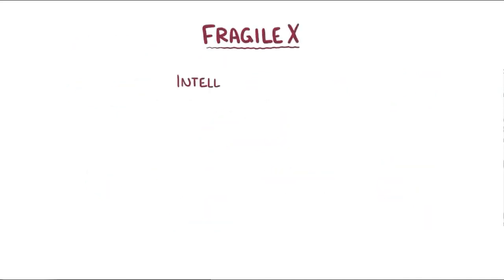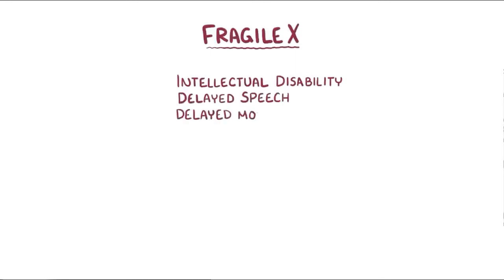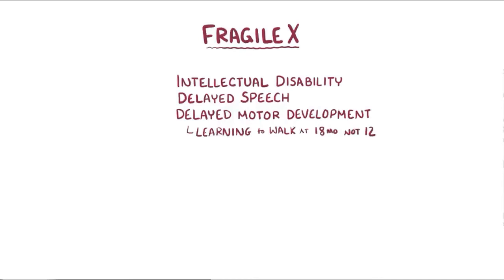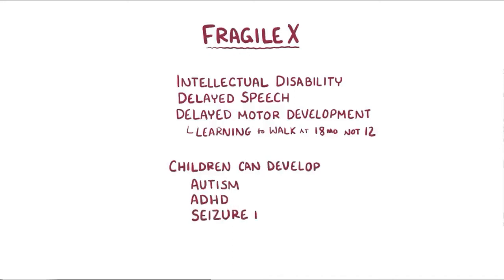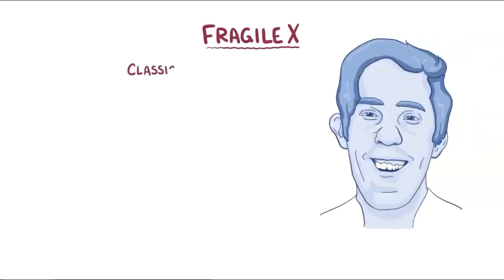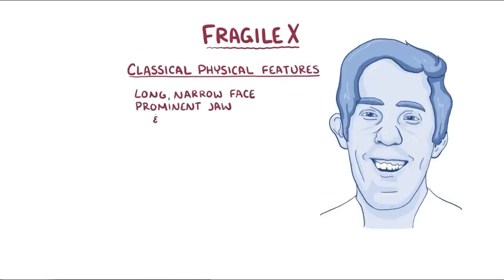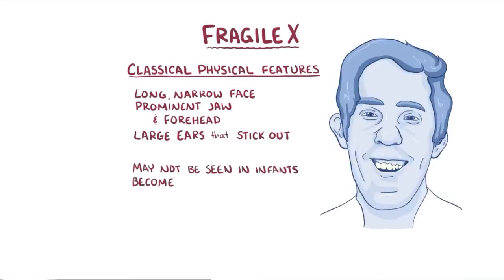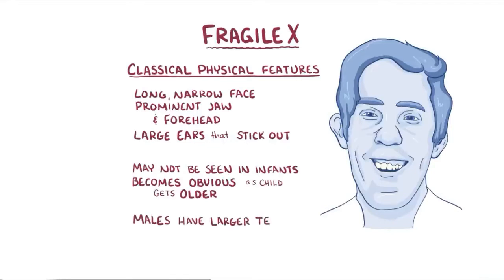Fragile X can cause intellectual disability, delayed speech, and delayed motor development — for example, learning to walk at 18 months instead of 12. Many children with Fragile X also develop autism, ADHD, and seizure disorders. Individuals with Fragile X syndrome can develop classic physical features as well, like a long and narrow face, a prominent jaw and forehead, and large ears that stick out. These facial features might not be seen in an infant, but become obvious as the child becomes older. Males can also have larger than normal testes after puberty.